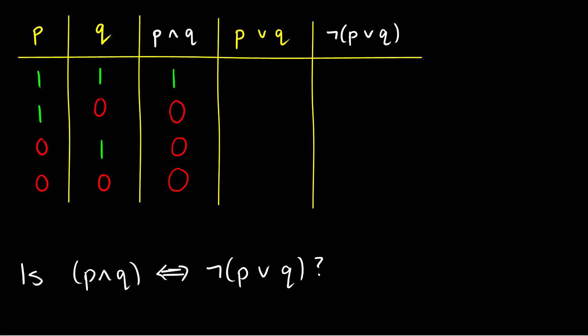The truth conditions for P∧Q are 1, 0, 0, 0. Now for P∧Q to be logically equivalent to ¬(P∨Q), that formula would also have to output 1, 0, 0, 0. So let's see if that's the case.